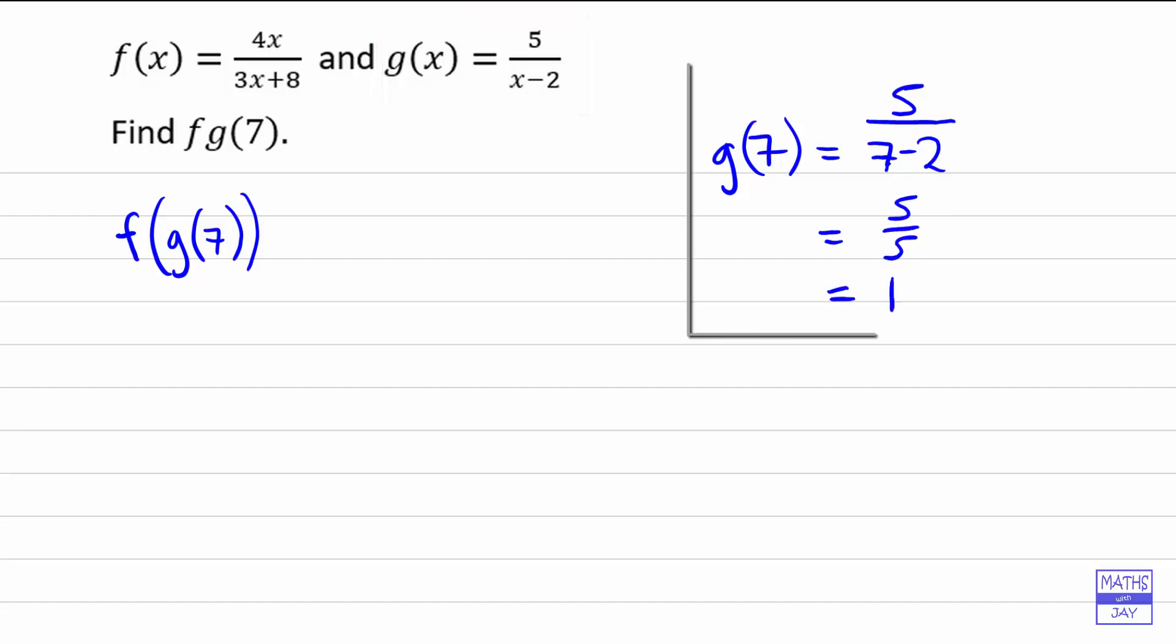So that means that what we're trying to do is to find f of 1. So now we're substituting 1 in for x in the function f so that's going to be 4 times 1 over 3 times 1 plus 8. So that turns out to be 4 over 3 plus 8 which is 4 over 11.